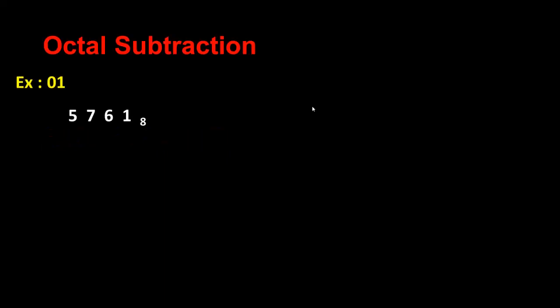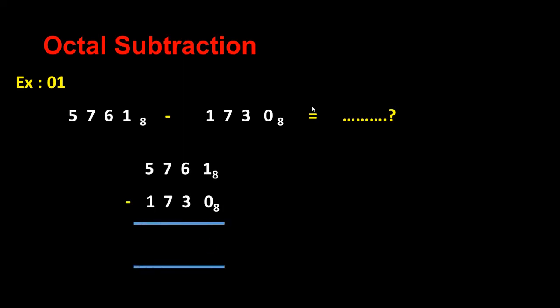Let's do octal subtraction. How to do octal subtraction? I have 5 7 6 1 minus 1 7 3 0. What is the answer? I'm going to write my question like this: 1 minus 0 is 1, 6 minus 3 answer is 3, 7 minus 7 answer is 0, 5 minus 1 answer is 4. This is my octal value: 4 0 3 1.